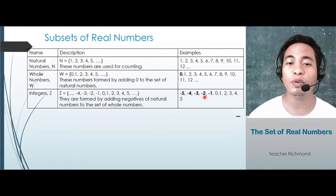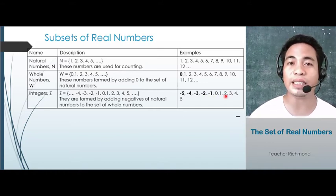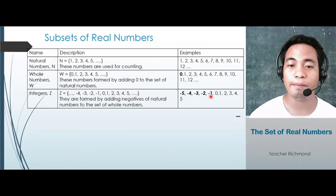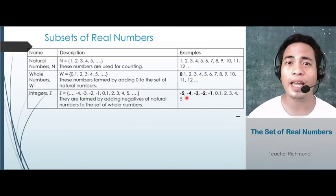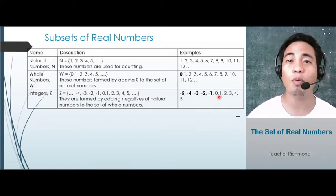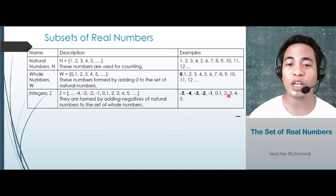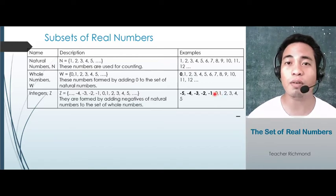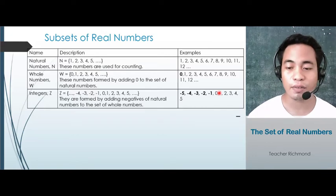In integers, you will have negative integers and positive integers. The negative integers are below 0: negative 1, negative 2, negative 3, negative 4, negative 5, and so on. The positive integers are greater than 0, like 1, 2, 3, 4, 5, and so on. And 0 is neither negative nor positive.